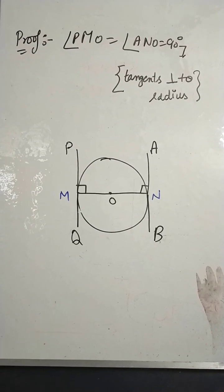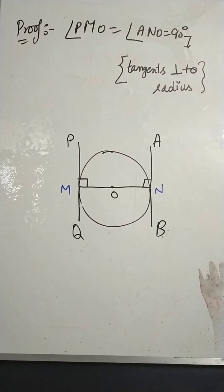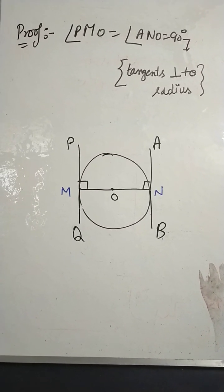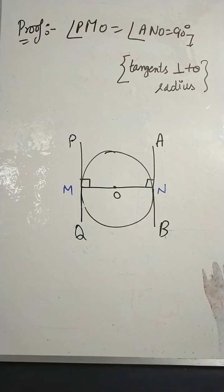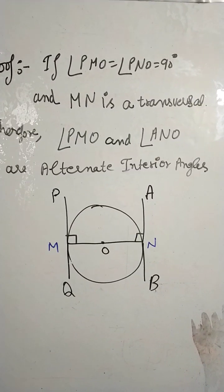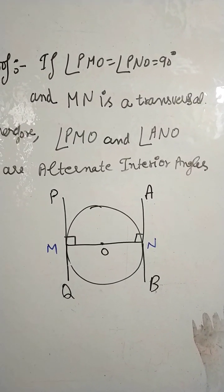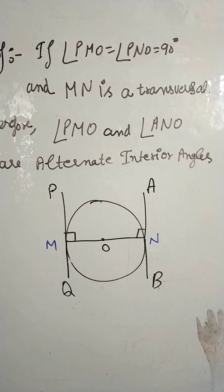Angle PMO equals angle ANO equals 90 degrees. The reason is tangents are perpendicular to the radius according to theorem 10.1. Now we can say that if angle PMO and angle ANO are 90 degrees and MN is a transversal,